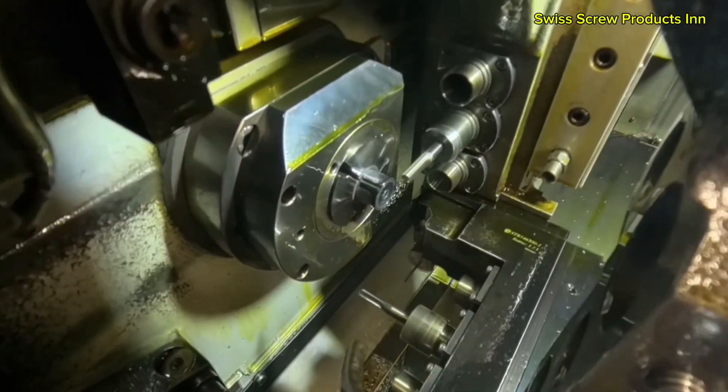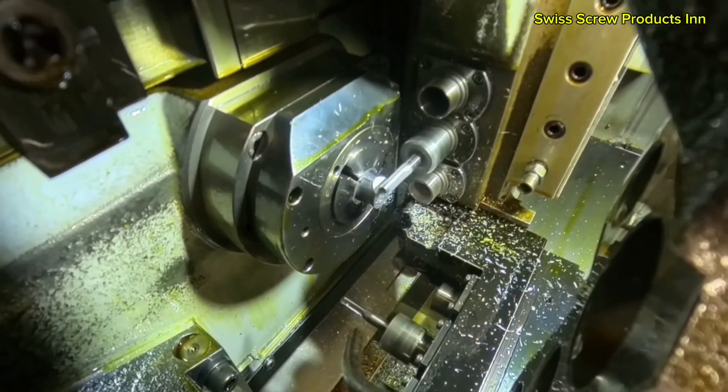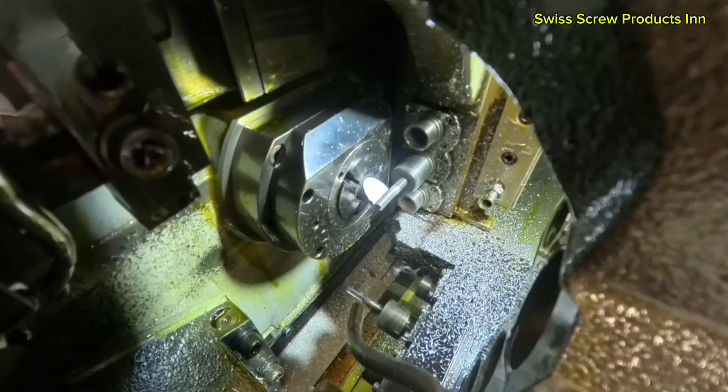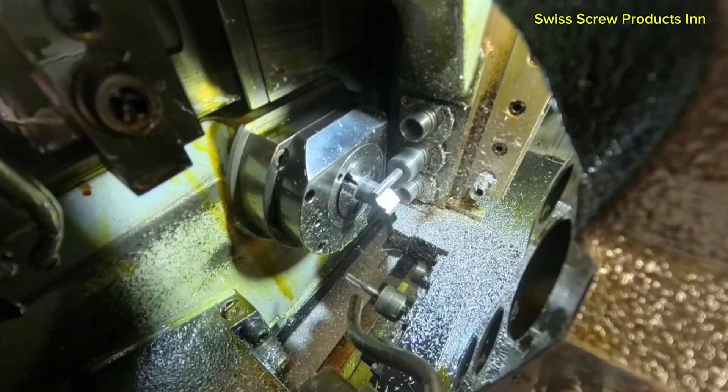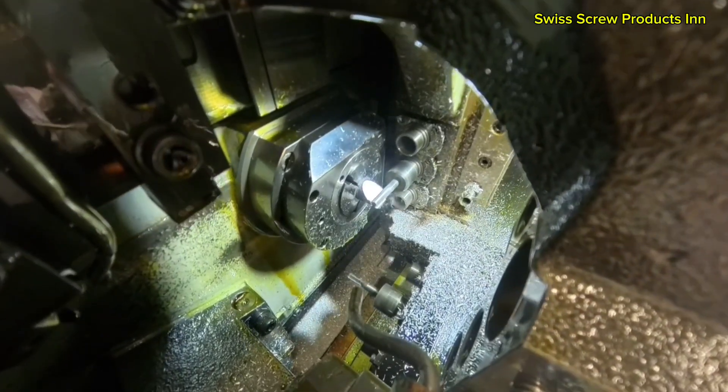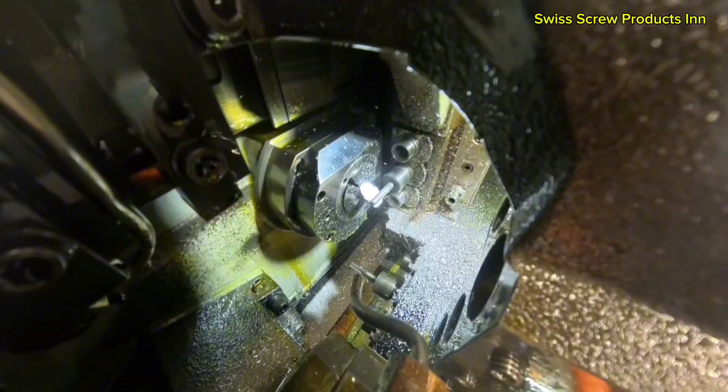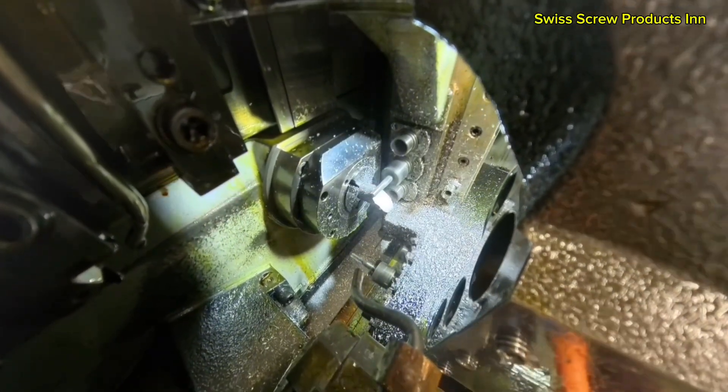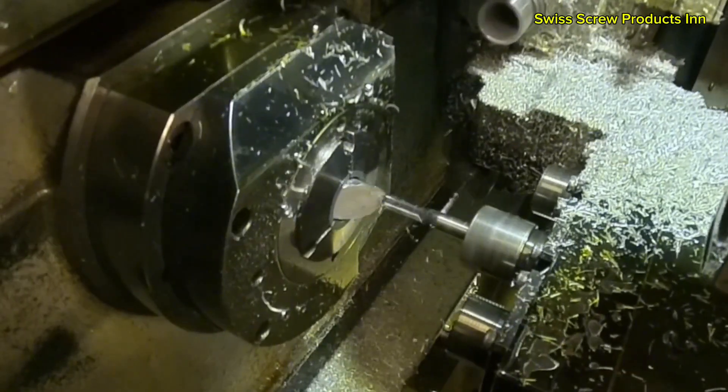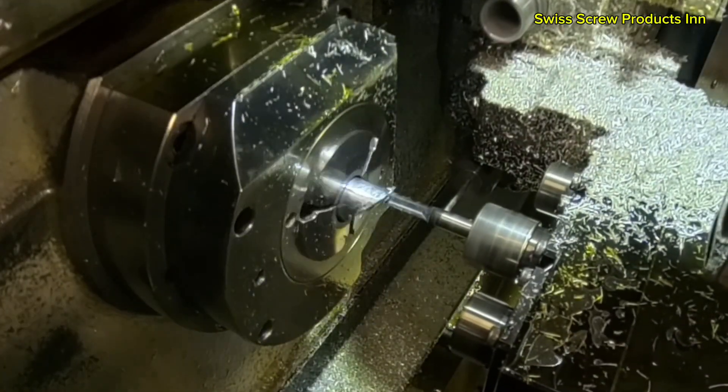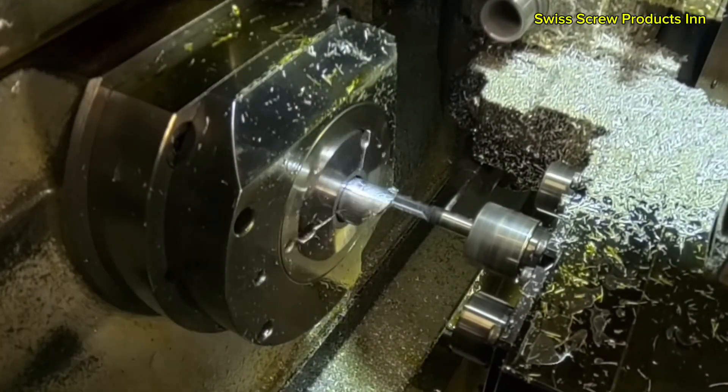Swiss screw machines are not limited to simple turning. In fact, what sets modern CNC Swiss lathes apart is their ability to perform multiple operations at once, all thanks to live tooling and multi-axis movement. Live tooling refers to rotary tools powered by an independent motor. These tools allow the machine to perform milling, cross-drilling, slotting, and engraving right on the lathe, without moving the part to another setup.